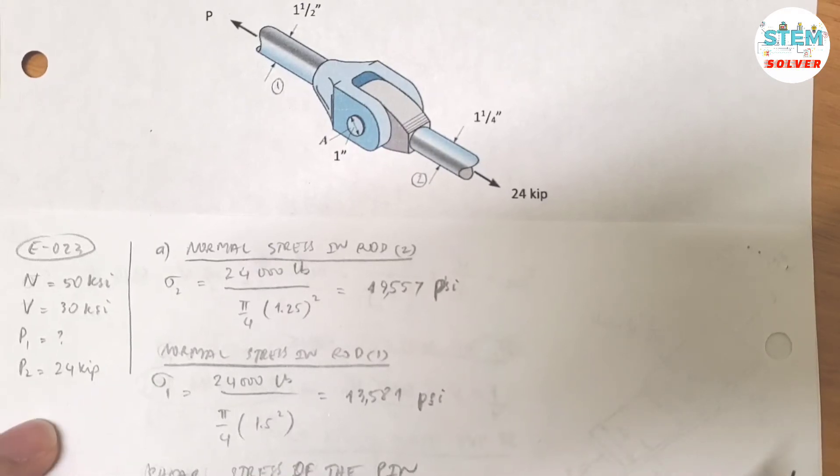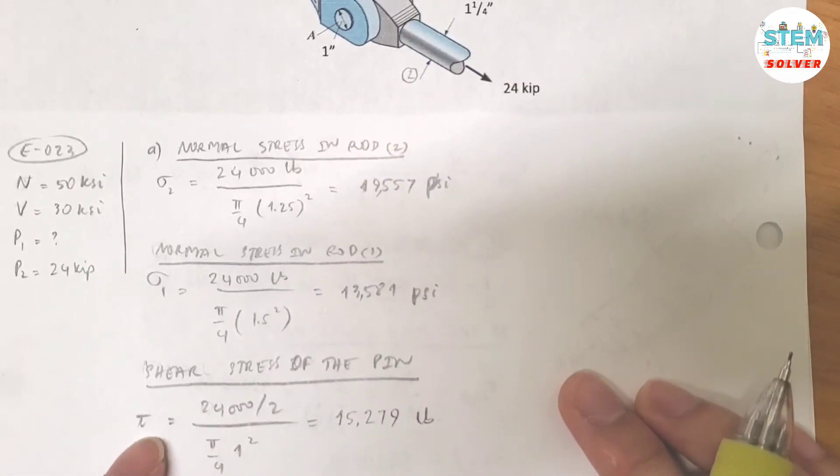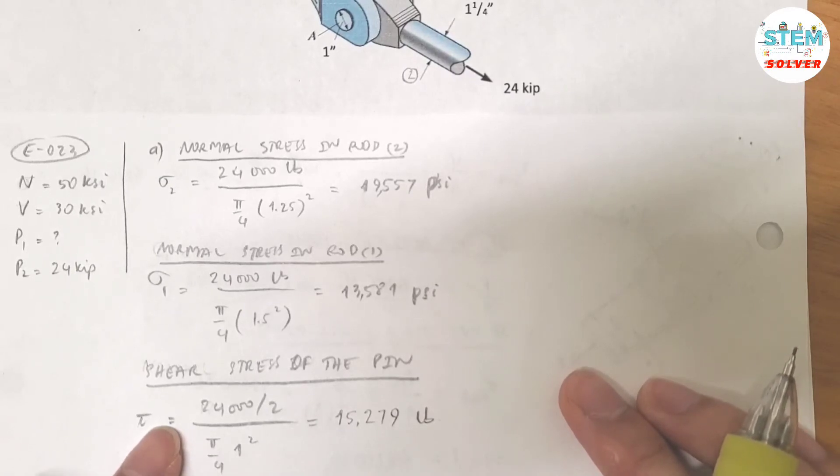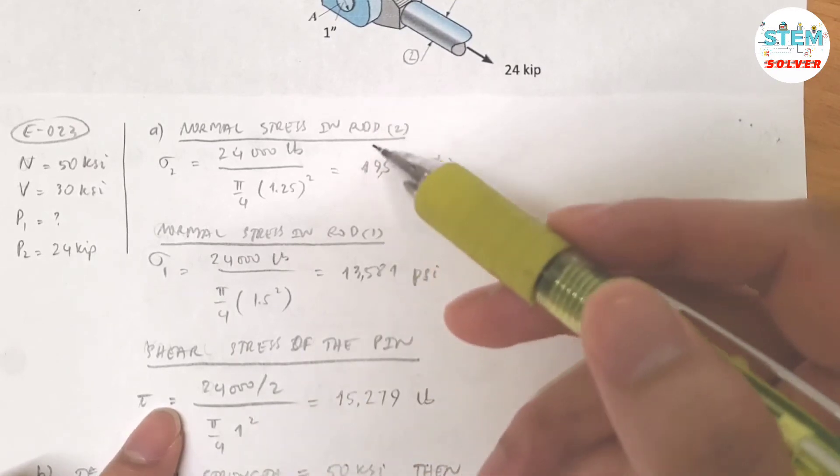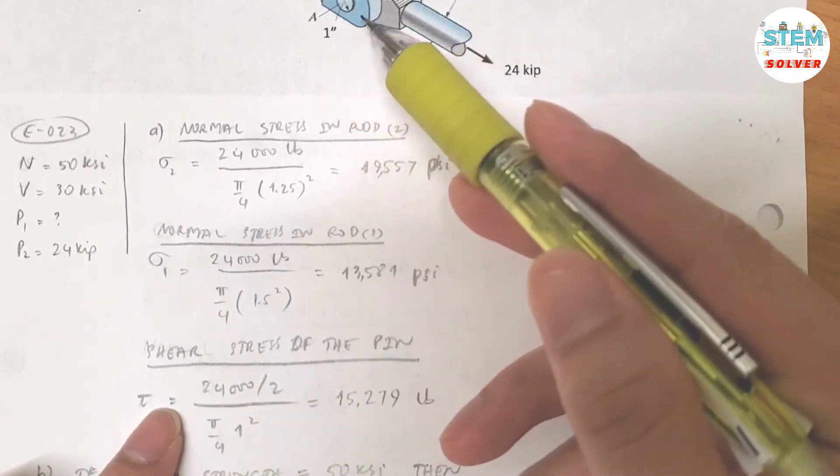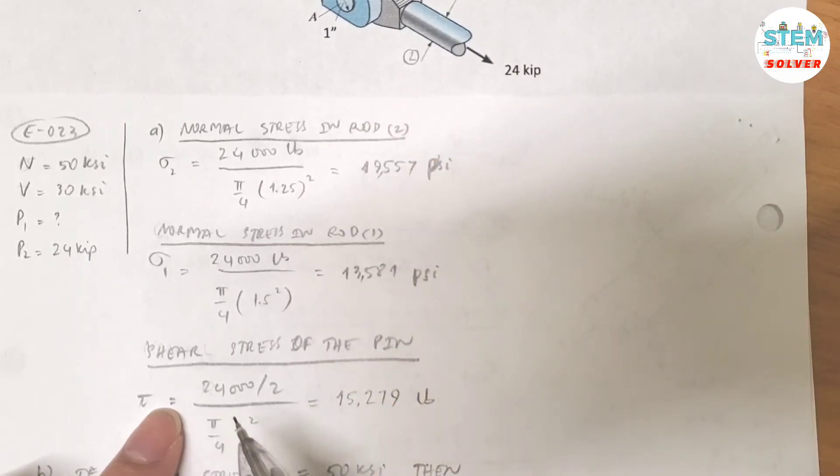Now to find the shear stress of the pin, this is again shear stress is equal to the shear force divided by the area of the pin. Okay, and the shear force, so you have a pin joint of double shear, so you have to divide the shear force by 2, and the area is equal to pi over 4 times the diameter of the pin which is 1 inch. Okay, so to put this in calculator you will get 15,279 pounds and that is the shear stress of the pin.